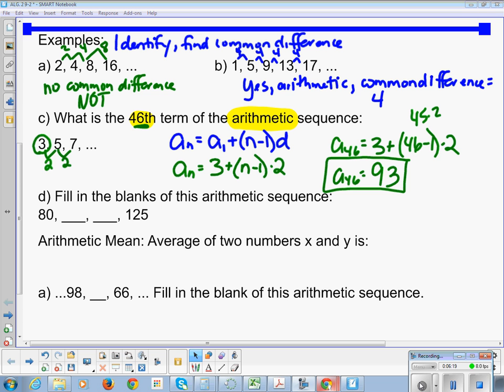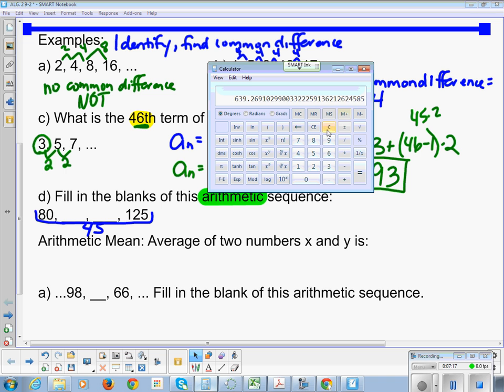So we're going to have to start getting clever because if we know it's arithmetic, then they're going to start giving us scenarios where the terms aren't clearly defined. So in this case for D, fill in the blanks of this arithmetic sequence: 80, something, something, 125. The only thing I know is that it's the same increment every time. So let's find what the difference is from 80 to 125. I think that's 45. So 125 minus 80, let's double check. So 125 minus 80 is 45.